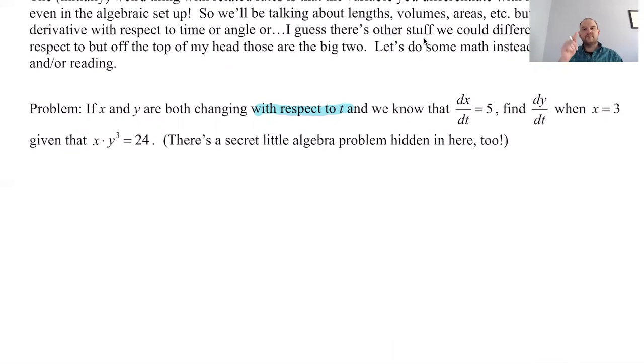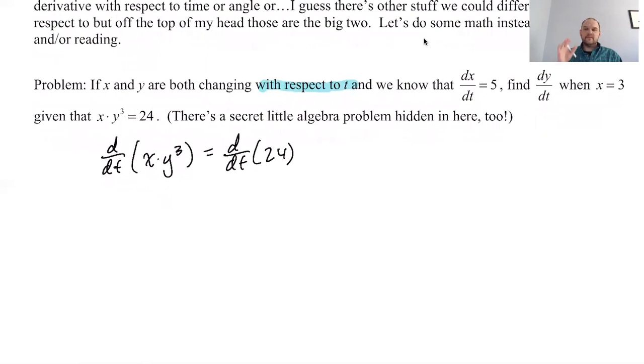So we're looking for dy/dt when x is 3, given x times y cubed equals 24. So x and y both change with respect to time, which means I do not want to substitute anything for them. I just want to find the derivative with respect to time overall. So I'm going to say that I'm looking for d/dt of x times y cubed, and that should be equal to d/dt of 24.